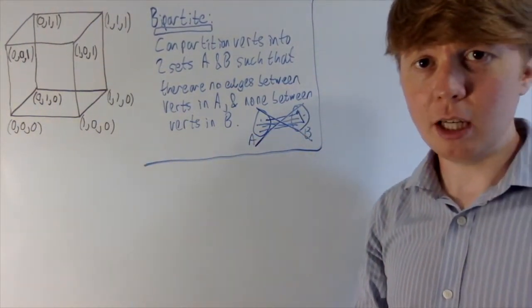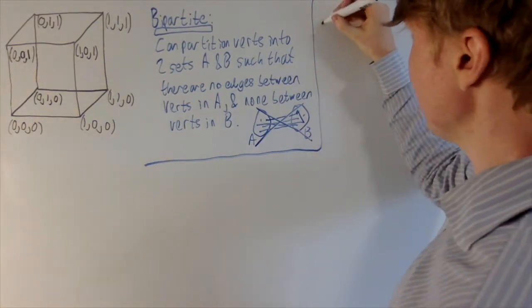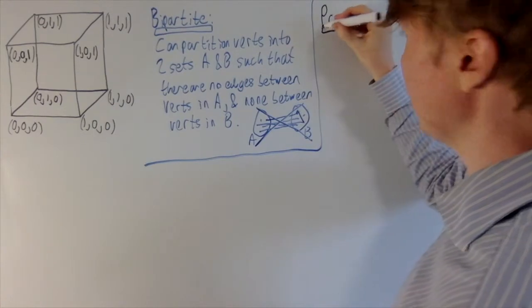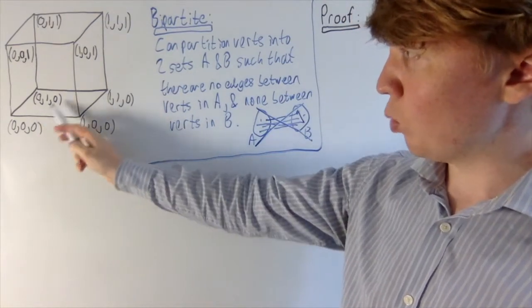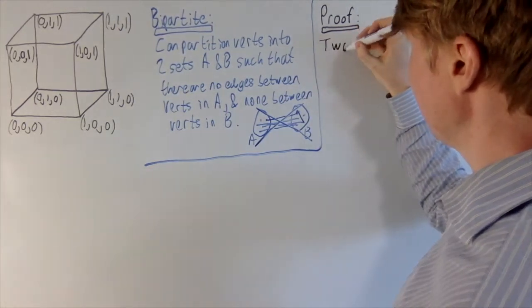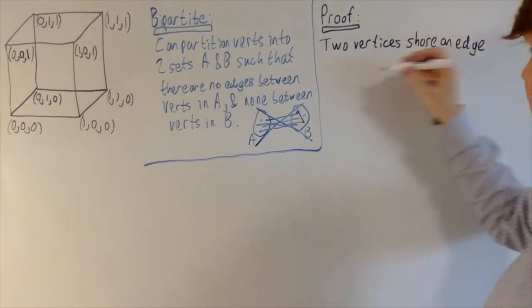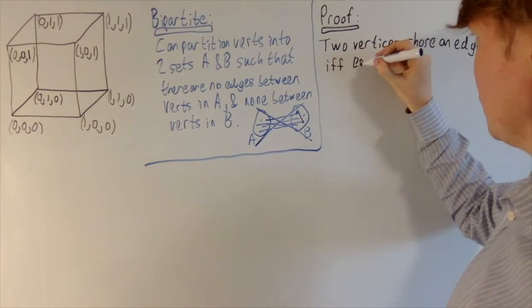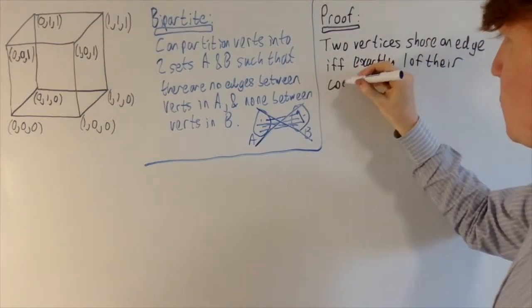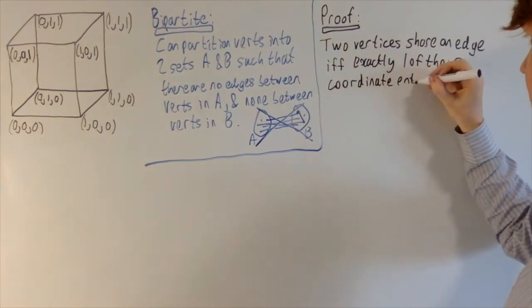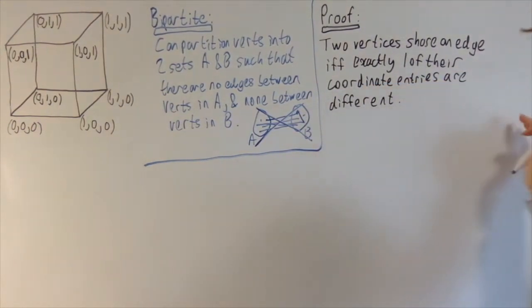To show that an n-dimensional hypercube graph is bipartite, we'll start by looking at the proof for the 3D cube. The key thing to observe is that two vertices are connected to each other if and only if their coordinates have exactly one coordinate entry that is different. This is a really useful fact and we'll use this property for the n-dimensional hypercube as well.